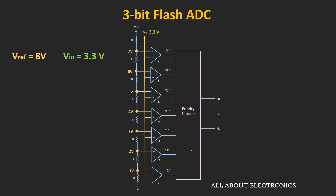Ideally, there should be 8 inputs to this encoder, but here there are only 7 inputs. So the remaining input is connected to logic 1 and it is set to the lowest priority. That means if all the comparator outputs are low, the output code of this encoder should be all zeros. For the input of 3.3V, the output of comparators 1, 2 and 3 is high. And as the priority is given in the descending order, the encoder gives the binary code corresponding to the third input.